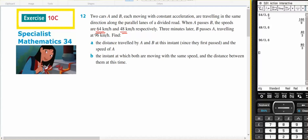OK, so 64 divided by 3.6 is 160 over 9 and 48 divided by 3.6 is 40 over 3. Three minutes later, so 180 seconds, B passes A.